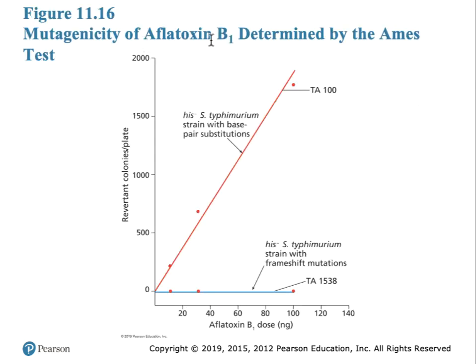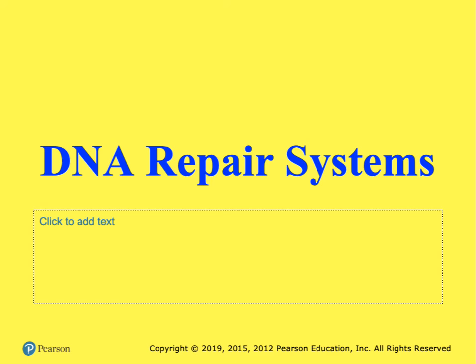Aflatoxin is a substance produced by fungi and is a great problem inside grain silos. When tested with bacterial strains containing frameshift mutations, the results suggest aflatoxin is not particularly dangerous for that mutation class. However, testing with a different strain, TA100, shows the true danger of aflatoxin B1 — this strain tests for base pair substitution mutations. The next section of the video will look at DNA repair systems.